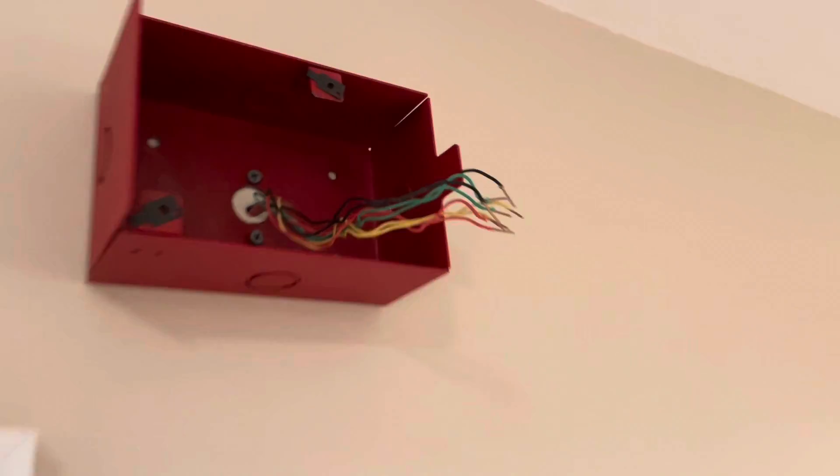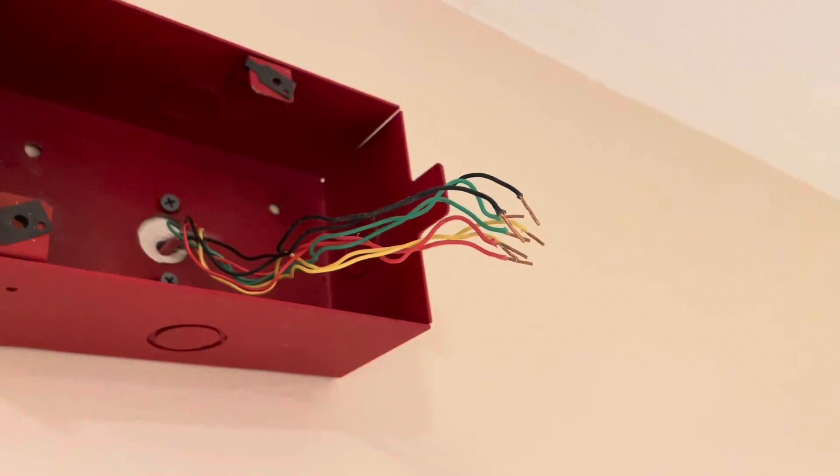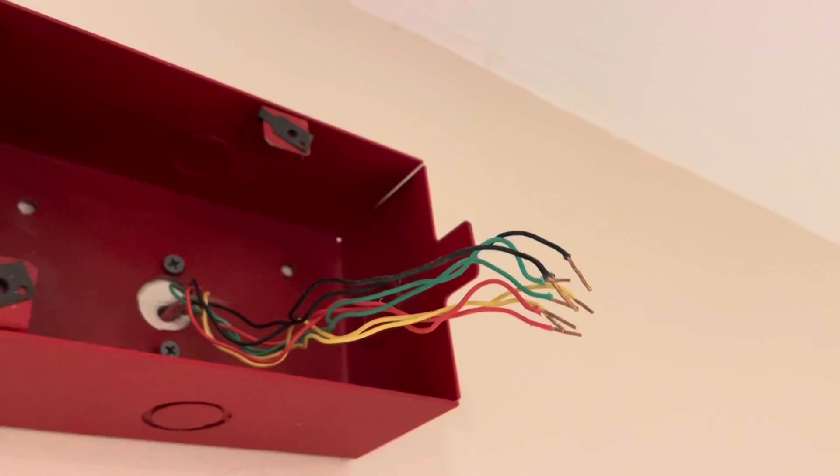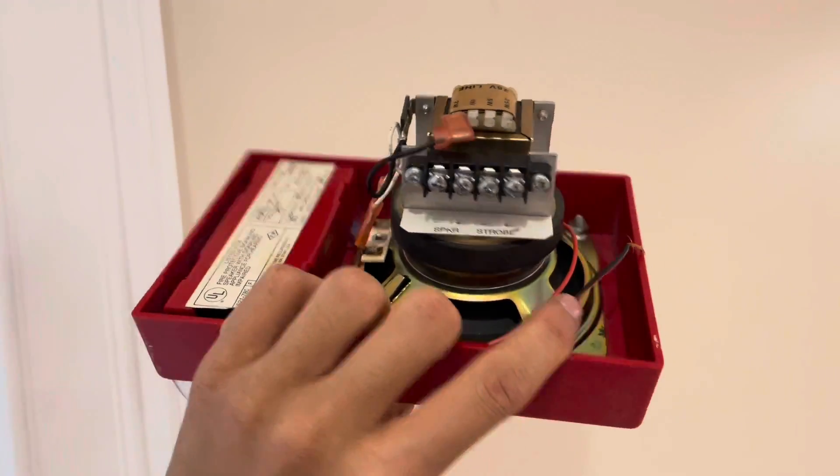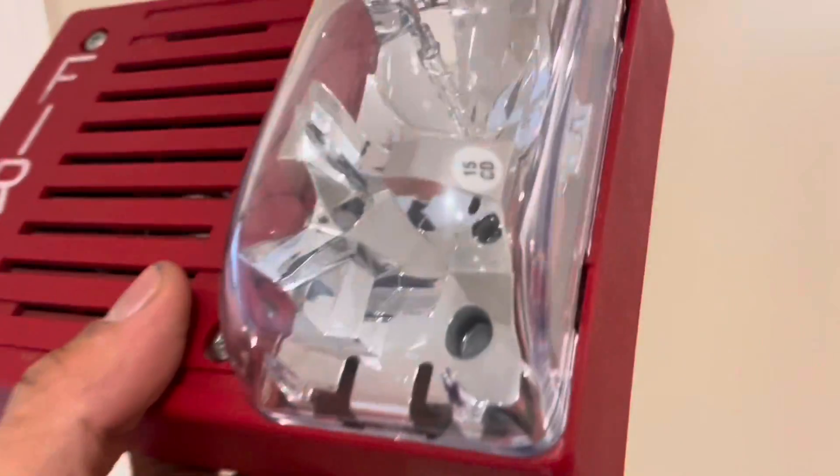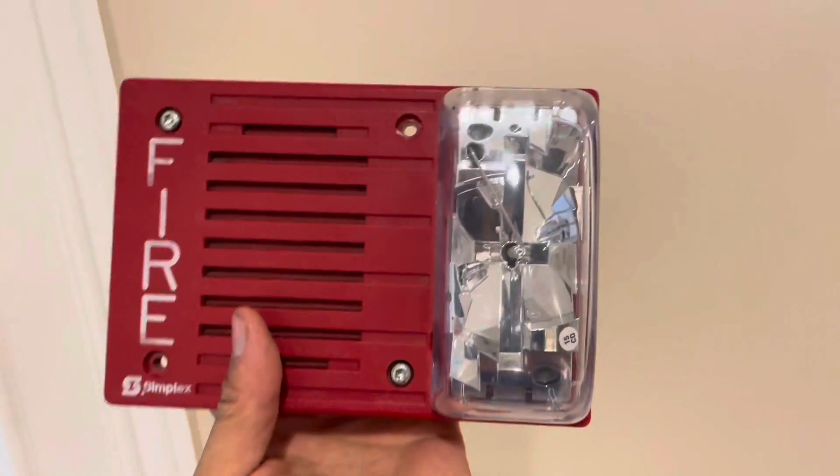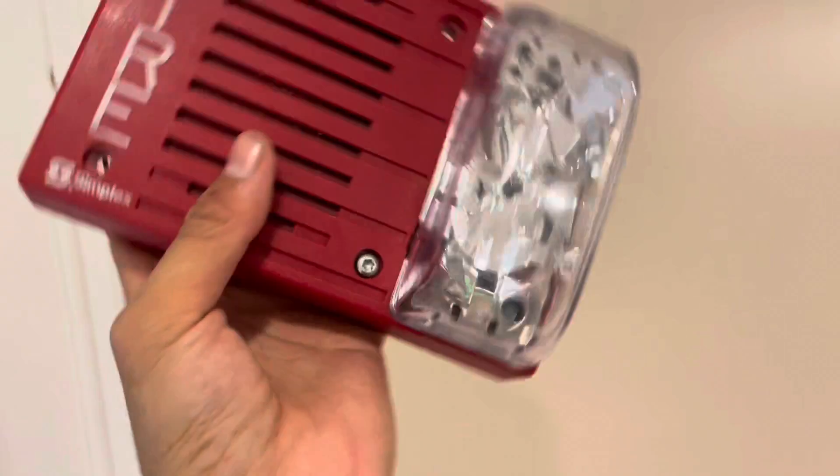So the wiring for these is really simple. You see I have two pairs of wires. Black and red go to the strobe output and the yellow and green wires go to the audible output. Now in this case I actually had to modify this device. The strobe on this is a syncable strobe. All the devices I'm putting up today are syncable so they're all going to sync.